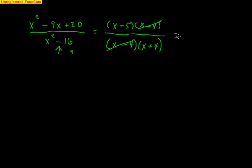So that was my common factor, and I get (x minus 5) on top left over and (x plus 4) on the bottom left over. Be careful with dividing — it's often that you can't really do a whole lot with division unless you factor first and get rid of a common factor. It's got to be the exact same common factor.